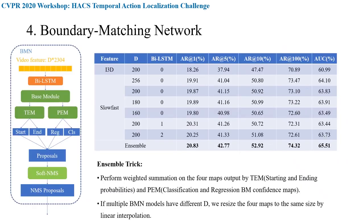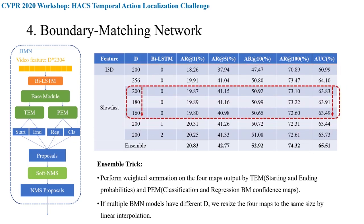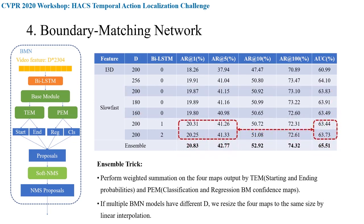These are the experimental results of BMN. We use different settings for different BMN models. We found that the performance obtained by SlowFast features is much better than S3D features. As the temporal size D decreases, performance drops, especially when D is 160. After adding LSDM, the AUC of proposals decreased; however, AR@1 and AR@5 improved significantly, which is very beneficial for detection.